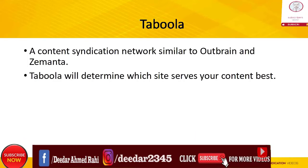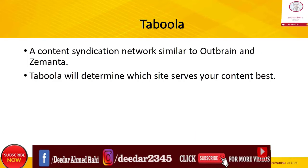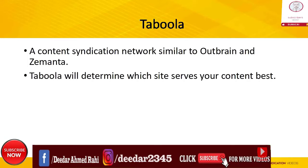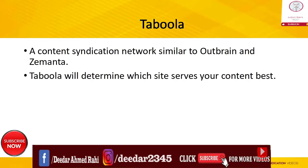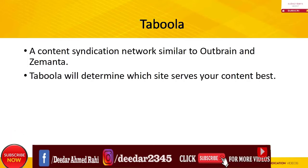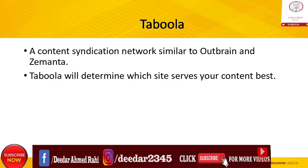There are three simple steps to start syndicating your articles: 1. Select the content to promote, 2. Conduct a test, 3. Create content based on the results. The first step is to select the post that you want to promote.